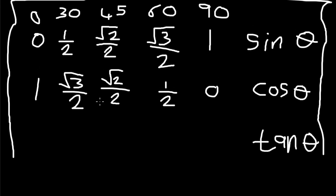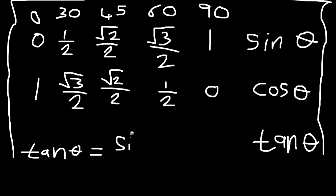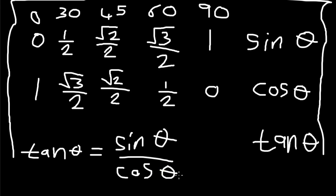For tan theta, it's a little bit challenging, but if you know how to work with fractions it's very easy. We all know from identities that tan theta is equal to sine theta over cos theta. So what I'm going to do is use that identity to divide the sine values by the cosine values to find each tan result.